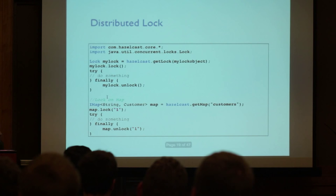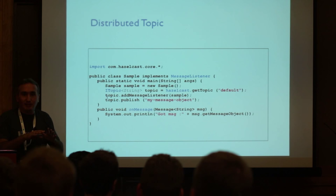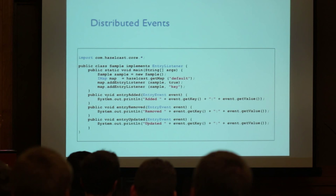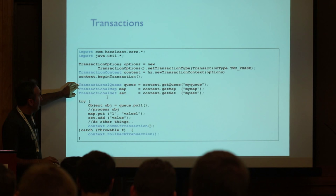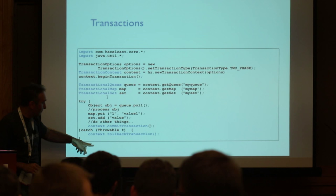Multi-map is straightforward. Queues you already know. Topic is similar to a queue, but every node listening will receive the message — just like a JMS topic. For events, you can listen for who is updating what on maps and queues. For transactions, we support two-phase and single-phase commits. You define transaction options, get a transactional queue or map, do your operations, then commit or rollback.